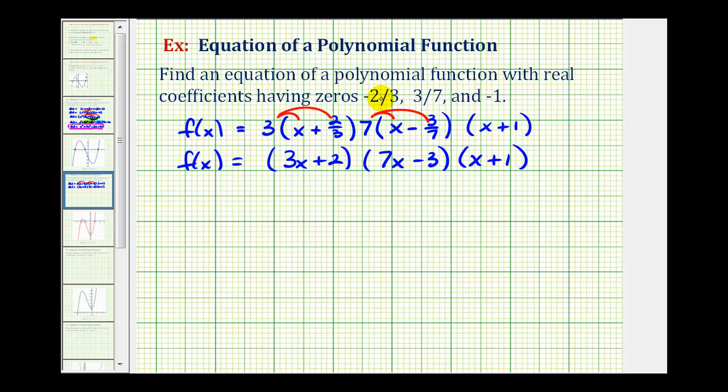Now if you can actually go straight from having these zeros here, to these factors here, that's great. It'll save you some time. Another way to come up with this factor here, knowing the zero is negative 2/3, we can say, we know x = -2/3 is a zero. If we multiply both sides of this equation by three, we would have 3x = -2. If we add two to both sides, we would have 3x + 2 = 0. Therefore, 3x + 2 would have to be a factor.